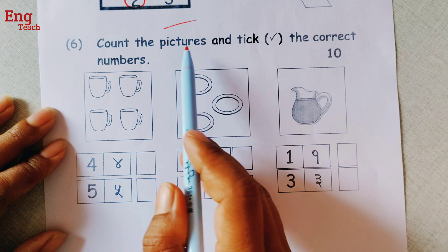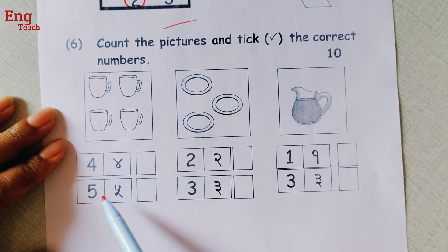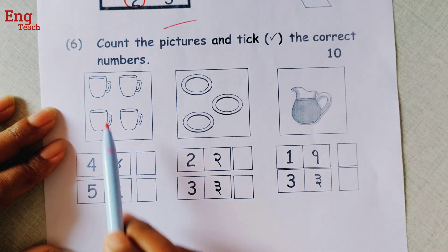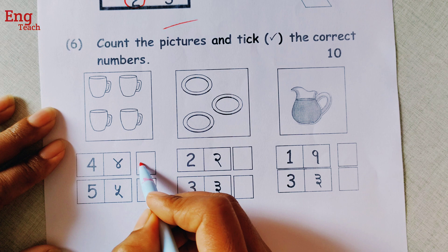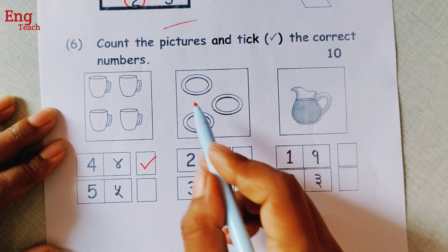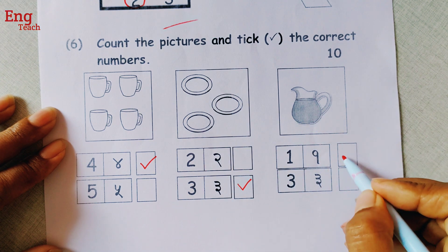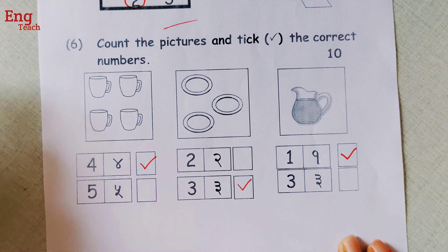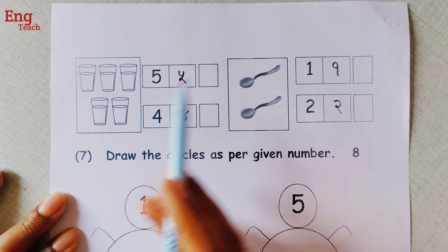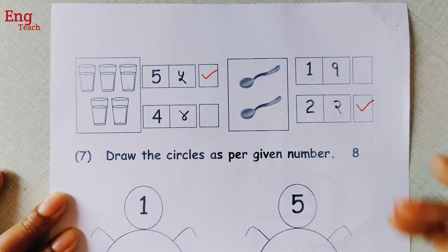Number 6, count the pictures and tick the correct numbers. Look at here. Here given 4 and 5, and here is given the picture. 1, 2, 3, 4. It is 4, so we have to tick here. 1, 2, 3. Here is 3 objects, so we have to tick the 3. And here only 1. And here 1, 2, 3, 4, 5, so tick 5. Here 1, 2, so here is 2. Tick 2.